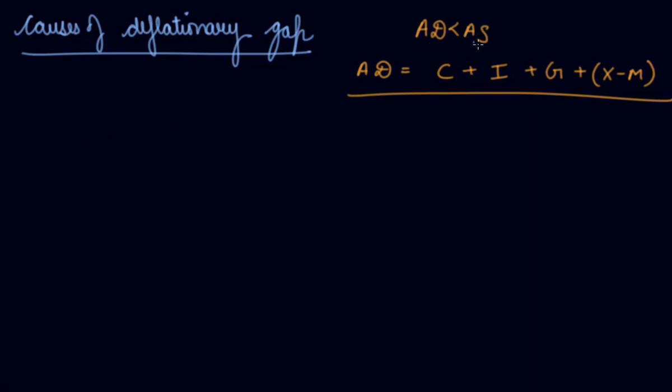So if your aggregate demand is less than your aggregate supply, which means number one your C have reduced, your investment might have reduced, your government expenditures might have reduced, your exports have reduced, your imports have increased. So these are the causes of your deflationary gap.